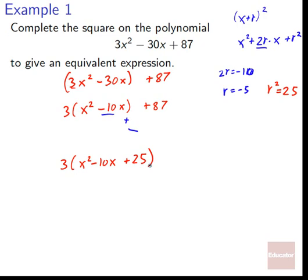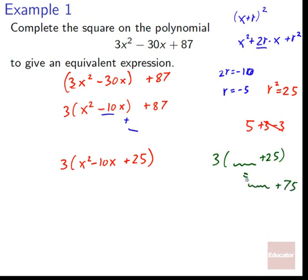We need to balance it: however much we put in one place, we take out somewhere else. If we add 25 inside the quantity, remember it's 3 × (stuff + 25), which effectively adds 3 × 25 = 75 to the whole expression. So we must subtract 75 on the outside to keep the scale balanced, then bring along the original +87: 3(x² − 10x + 25) − 75 + 87.